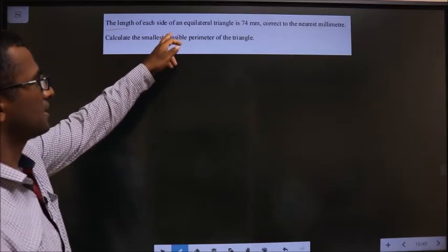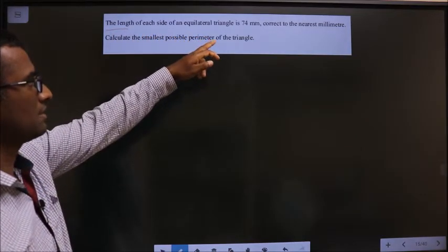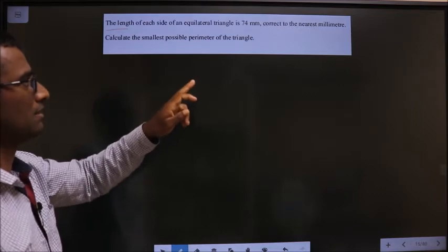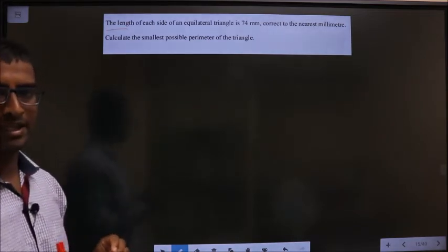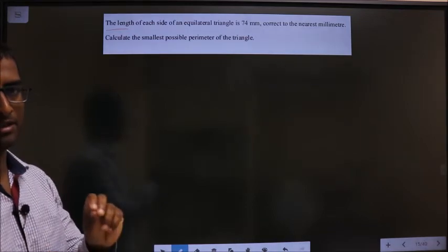The length of each side of an equilateral triangle is 74 mm, corrected to the nearest mm. So let us write upper and lower bound for 74 mm.